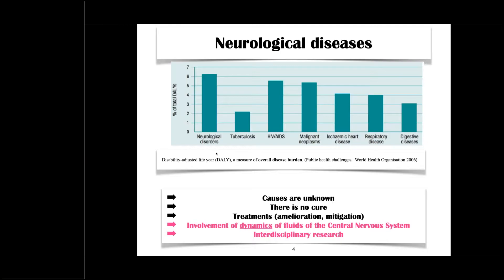But obviously, there is an issue of the causes being unknown. There is no cure. We don't know the causes, obviously. Treatments aim for amelioration, mitigation. But one of the things that seems to be accepted is that the involvement or the dynamics of fluids of the central nervous system is important. And then the topic becomes very much interdisciplinary research topic involving not only medical doctors from the clinical point of view, but also other scientists. And this might explain why mathematicians can also get involved.